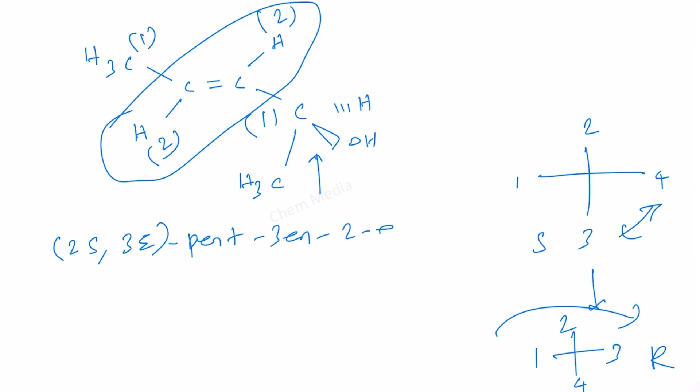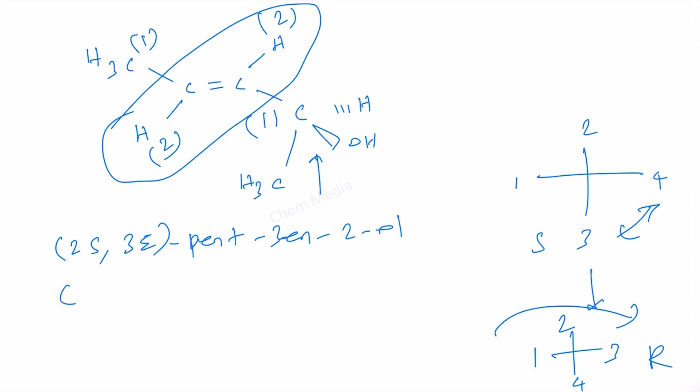We can also get 2R,3E-pent-3-en-2-ol once we consider that the OH is behind us and the hydrogen is towards us, and then the methyl group here.